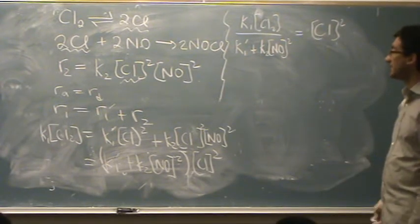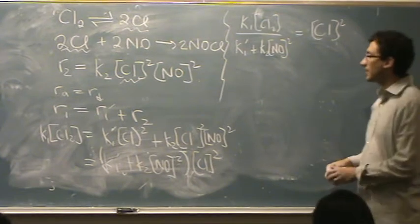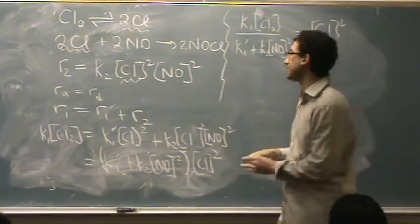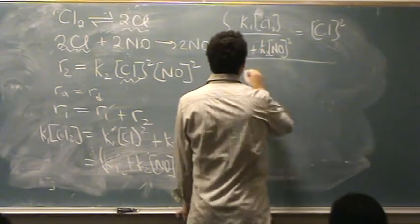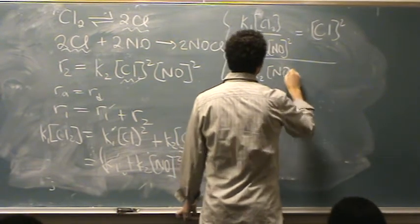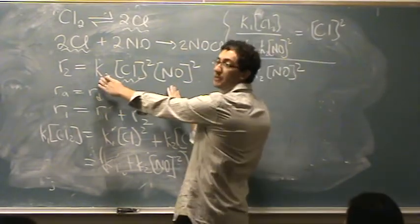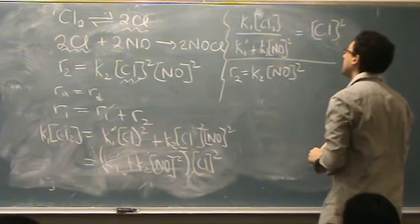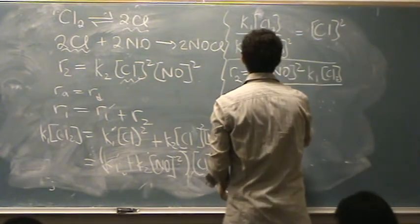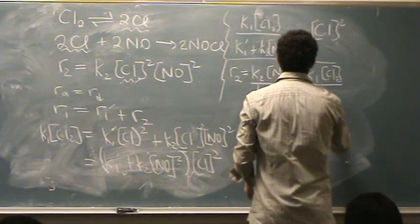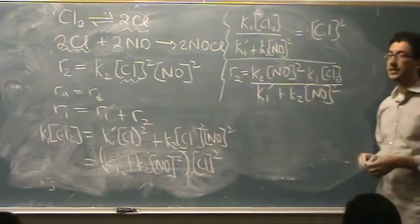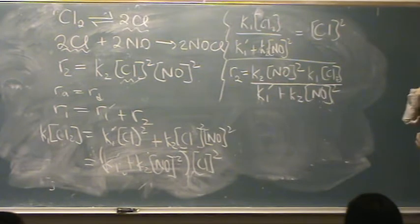I can take the square root of both sides to find Cl, but I don't need to because I need [Cl]². So I'll plug this expression directly into rate 2. Rate 2 equals K2[NO]² times K1[Cl2] all over K1' plus K2[NO]². That's the answer, and I could rearrange by grouping the K's together.